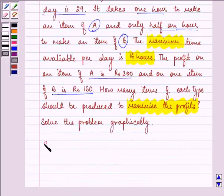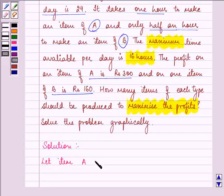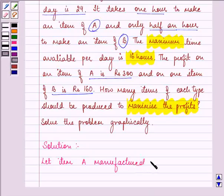Solve the problem graphically. So here, first of all, let item A manufactured per day be x and item B manufactured per day be y.